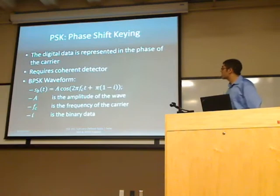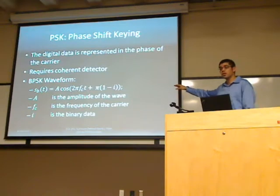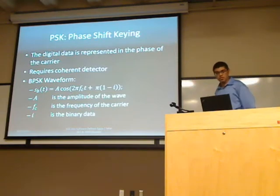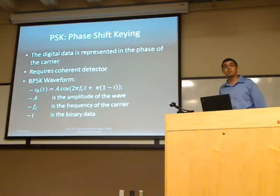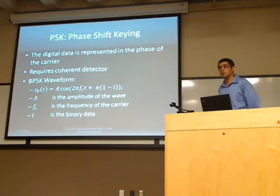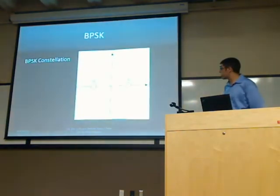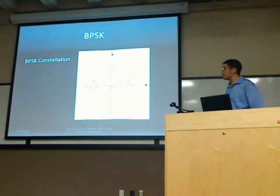This is phase shift keying. The transmitted data is represented by the phase of the carrier wave, and so it requires a coherent detector — meaning the detector and the transmitter have to be synchronized in frequency and phase. That's why it's hard to implement. The BPSK waveform is given by that equation. In the in-phase/quadrature plane, BPSK transmits only two points — either a one or a zero.